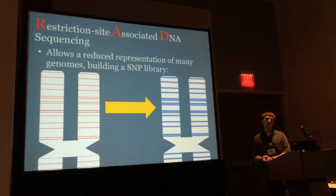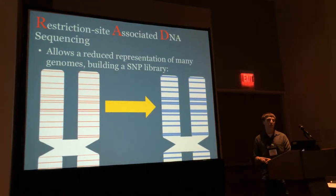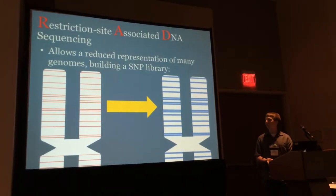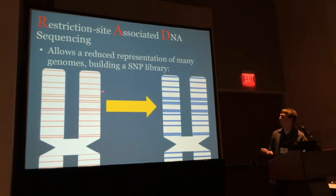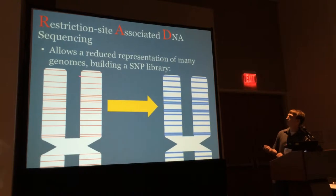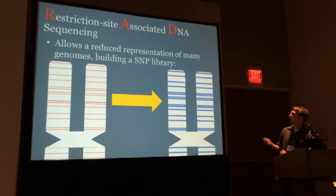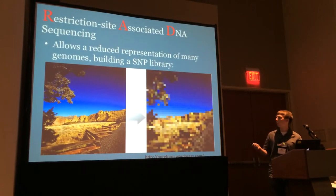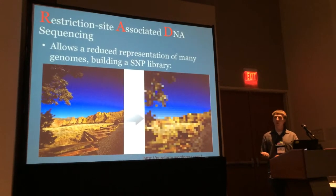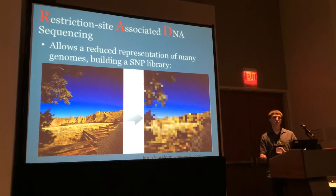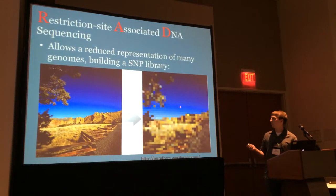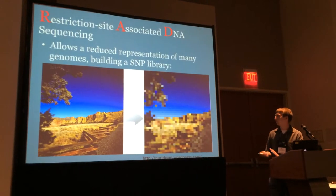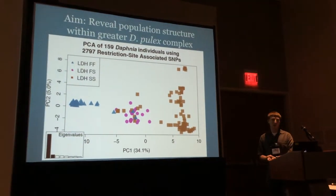My approach is to use a restriction site-associated DNA sequencing approach — sometimes called RADseq or RAD tagging. Basically, you expose whole genome DNA to restriction enzymes which make the same homologous cuts, and then sequence around those cuts. Heuristically, if a whole genome assembly is a gorgeous mountain landscape, what I'm essentially doing is taking many, many grainy photos, cramming them all on my memory card, and comparing differences at a lower scale of resolution. This is a very cost-, time-, and space-efficient way to get at these questions.